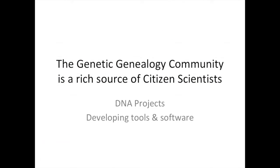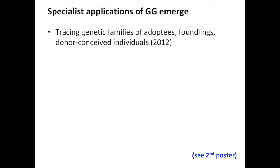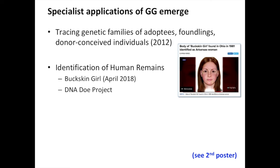The genetic genealogy community is a rich source of citizen scientists — many running their own DNA projects, others developing tools and software, and others working on the Y-DNA haplotree, the tree of mankind. A lot of specialist applications of genetic genealogy have emerged over the years, primarily tracing genetic families of adoptees, foundlings, and donor-conceived individuals — we've been doing that in the community for the last seven years or so. One Facebook group, DNA Detectives, devoted to this type of research, has over 111,000 members, giving you some idea of the magnitude of this crowd-sourced citizen science.